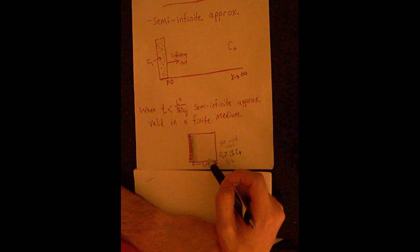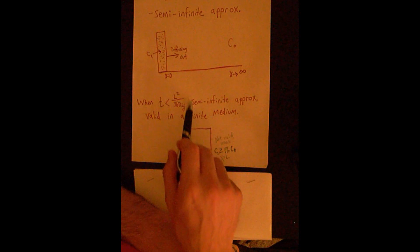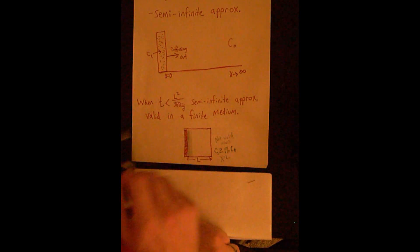So we couldn't use this semi-infinite method when you have this time. And again, this would happen in longer times and greater diffusion distances. That's why we have this t less than L squared divided by 36 D_ij as our limiting factor when we can use semi-infinite approximations.